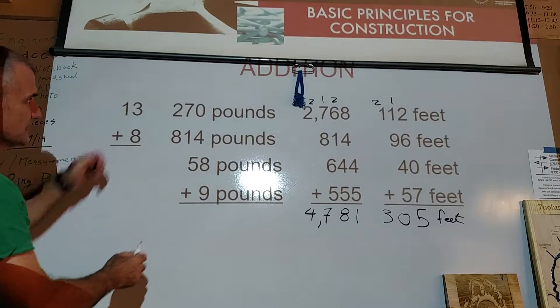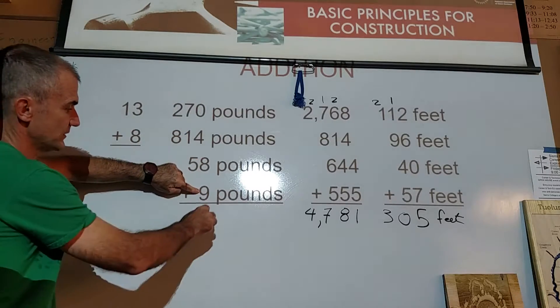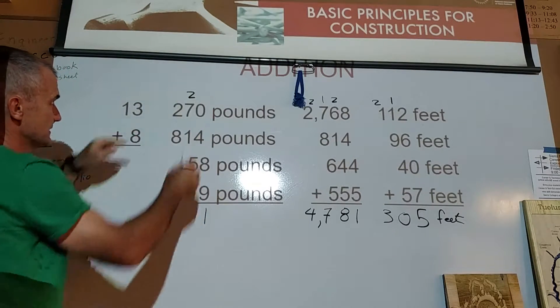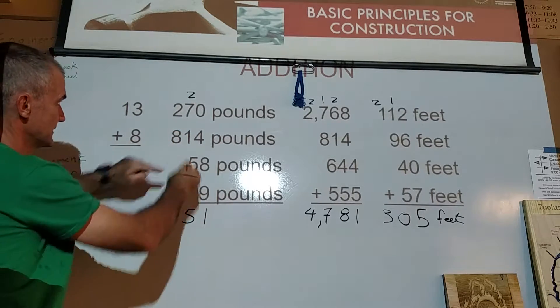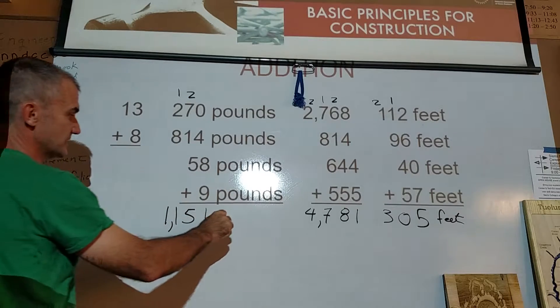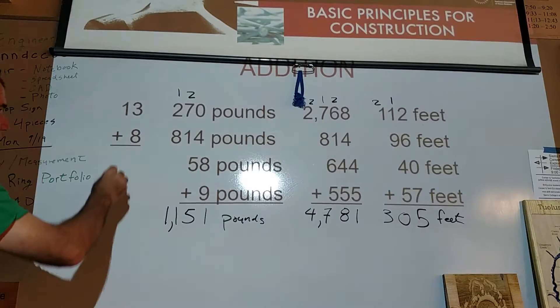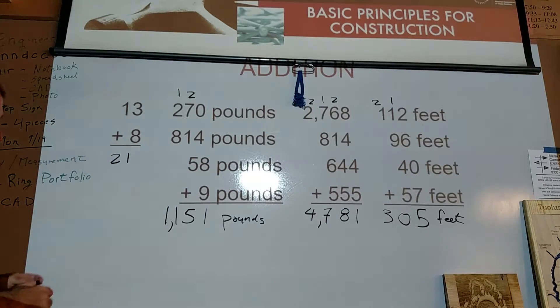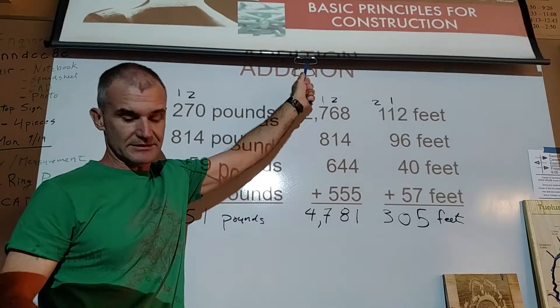Right here I'm adding pounds. 0, 4, 4, 12. 12 and 9 is 21. Carry the 2. 9, 10, 15. Carry the 1. 10, 11. Remember the comma and that's pounds. And the 4th one right here is 21. No units attached to that. It's really about knowing your math facts and keeping organized.